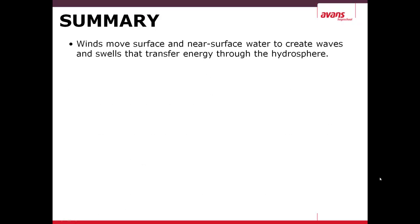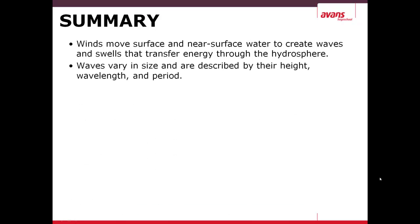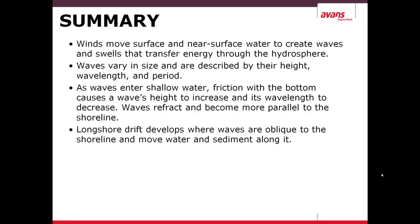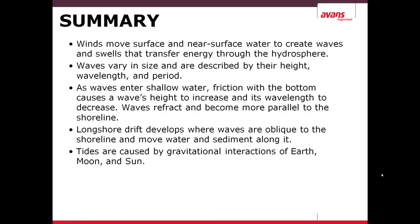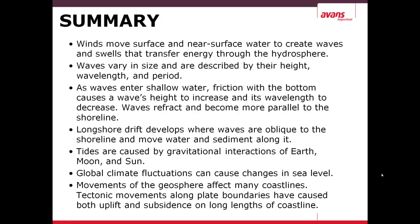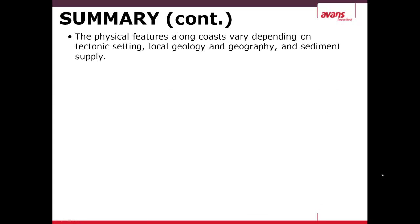In summary, we have learned: winds move surface and near-surface water to create waves and swells that transfer energy through the hydrosphere. Waves may vary in size, described by their height, wavelength, and period. As waves enter shallow water, friction with the bottom causes the wave's height to increase and its wavelength to decrease, which in turn causes the waves to refract and become more parallel to the shoreline. Longshore drift develops where waves are oblique to the shoreline and move water and sediment along it. Tides are caused by gravitational interactions of Earth, Moon, and Sun. Global climate fluctuations can cause changes in sea level. Movements of the geosphere affect many coastlines, including tectonic movements along plate boundaries. The physical features along coasts vary depending on tectonic setting, local geology and geography, as well as sediment supply.